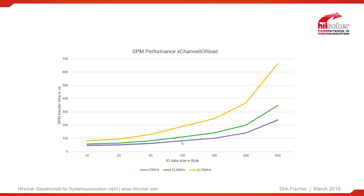If we increase the frequency, we can achieve shorter read times. For a typical application — say, a PROFINET device with a cycle time of one millisecond and 200 bytes of data — you need only 200 microseconds or less at higher SPI clocks to transfer the data. So the SPI interface is not really a bottleneck and can be used in applications with higher demands on real-time behavior.